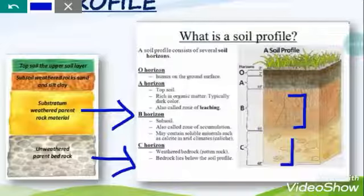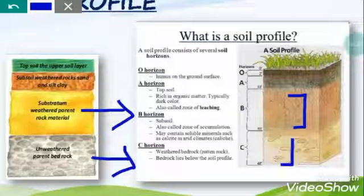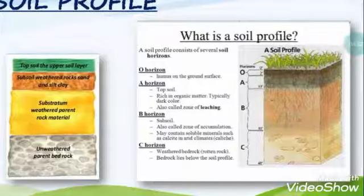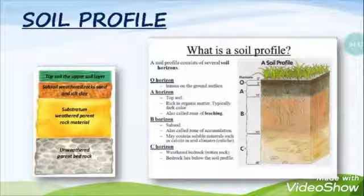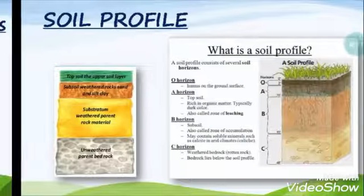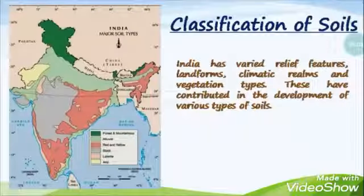The C horizon is the last layer and is made up of parent materials. All the parent rock of a soil is accumulated in this last layer. So, to summarize: the soil is made up of different layers or horizons, and these layers or horizons of soil are known as the soil profile.